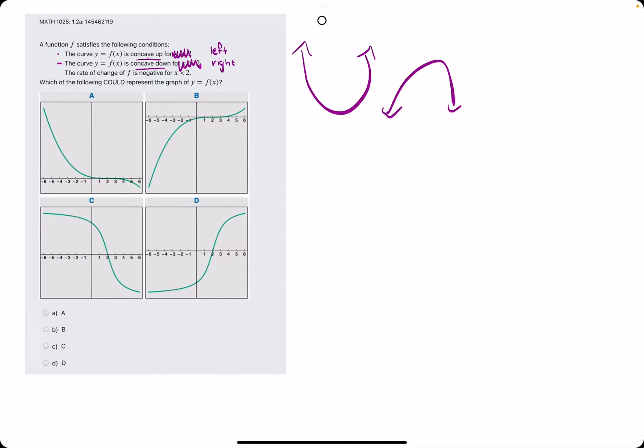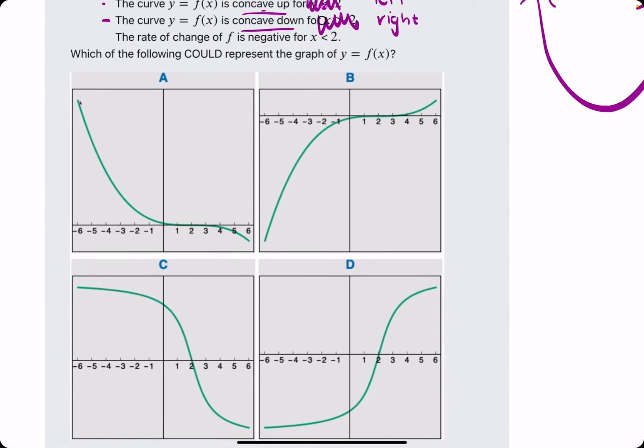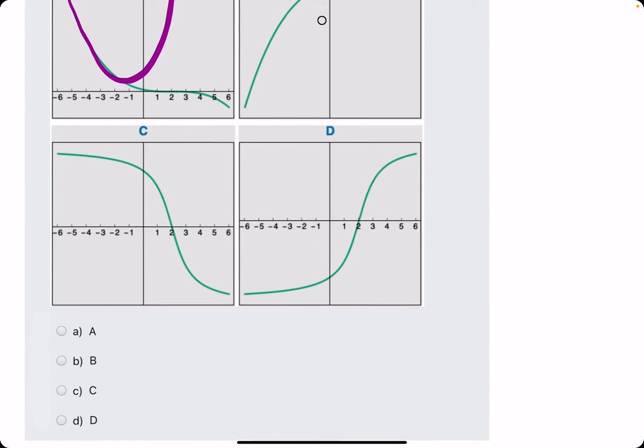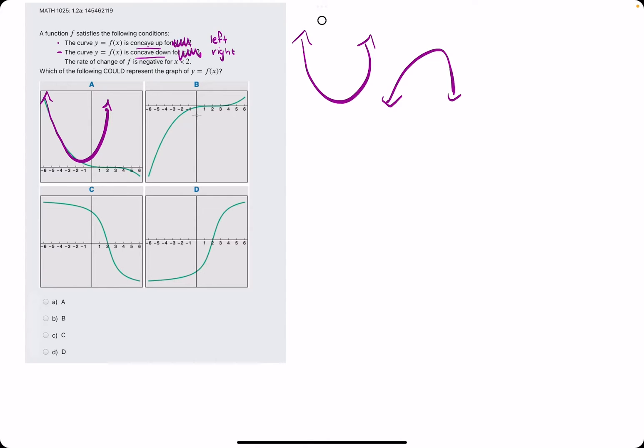Which of these functions start concave up? It looks like A starts concave up. That's a good sign. And it looks like D is the other one that starts concave up. Well, it looks like options B and C start concave down. So we can eliminate B and C.